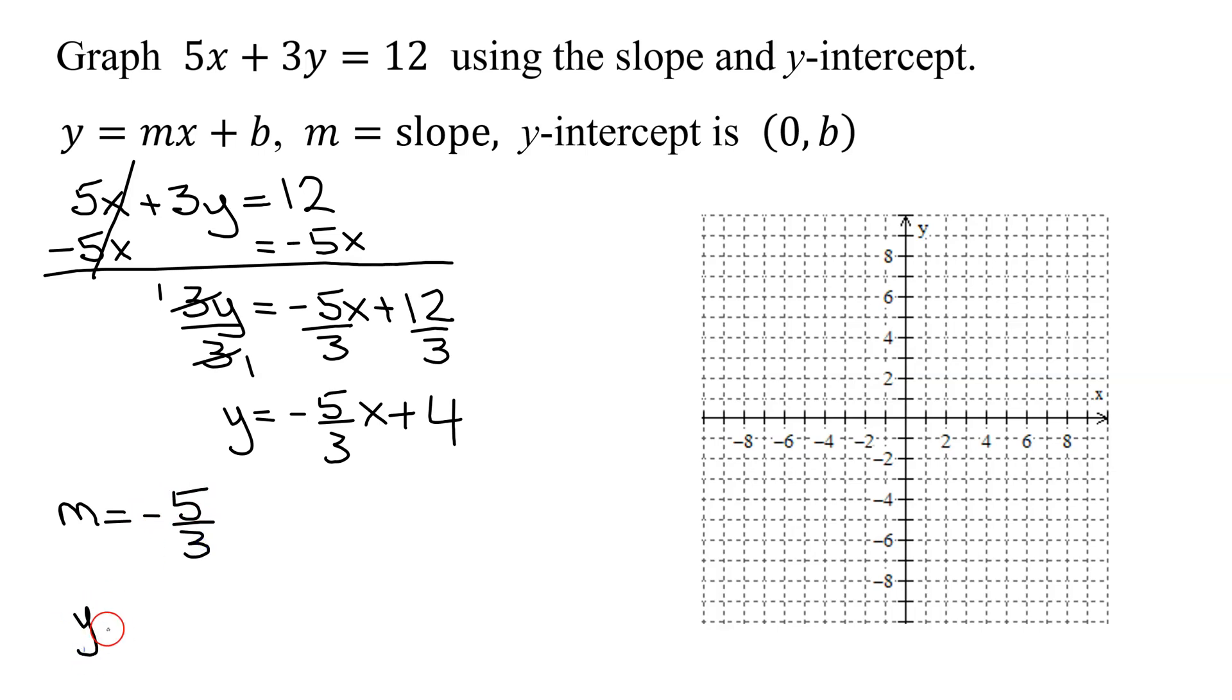And the y-intercept is the ordered pair 0, b. What is b in our case? b is positive 4. So my y-intercept is 0, 4.